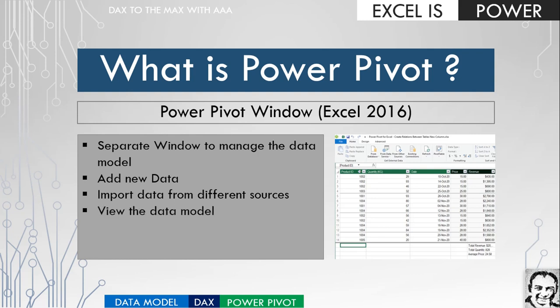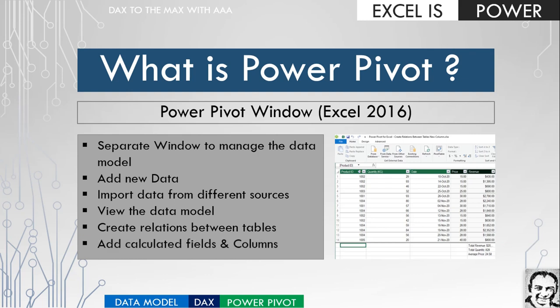You can also use the Power Pivot Window to view the data model — if you're working from the normal Excel window, you won't be able to view the data model unless you activate the Power Pivot Window. You can also use it to create relations between tables and to add calculated fields or calculated columns inside your data model.